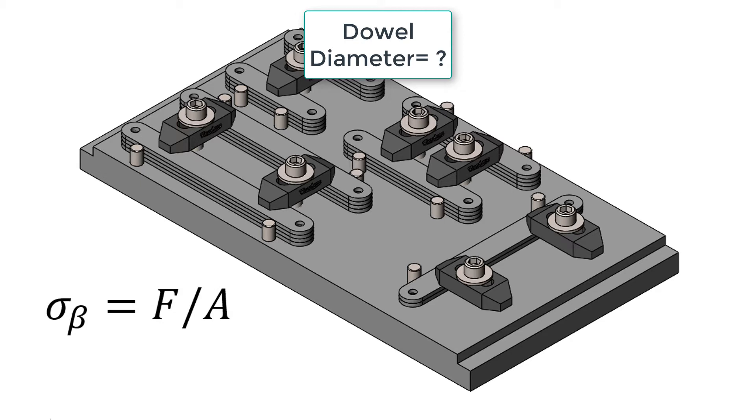The bearing stress is very important when designing jigs and fixtures, as it is the load between two separate bodies, typically between a hardened dowel and two blocks being aligned by the dowel. We know to calculate this, we take force divided by the area over which the force is applied.